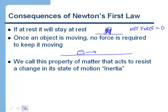We call this property of matter inertia — the property that every object has that makes it resist changes in its state of motion. An object that's already moving wants to keep moving, and an object that's already at rest wants to stay at rest. That property is called inertia.